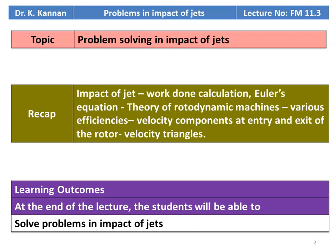In the earlier two lectures on the impact of jet, we discussed the theory part of the impact of jet, work done calculation, Euler's equation, and we studied about the theory of rotor dynamic machines, various efficiencies of rotor dynamic machines, and we discussed about the velocity components of entry and exit velocity of the rotor and velocity triangles. The learning outcome: at the end of the lecture, the student will be able to solve problems in the impact of jet.